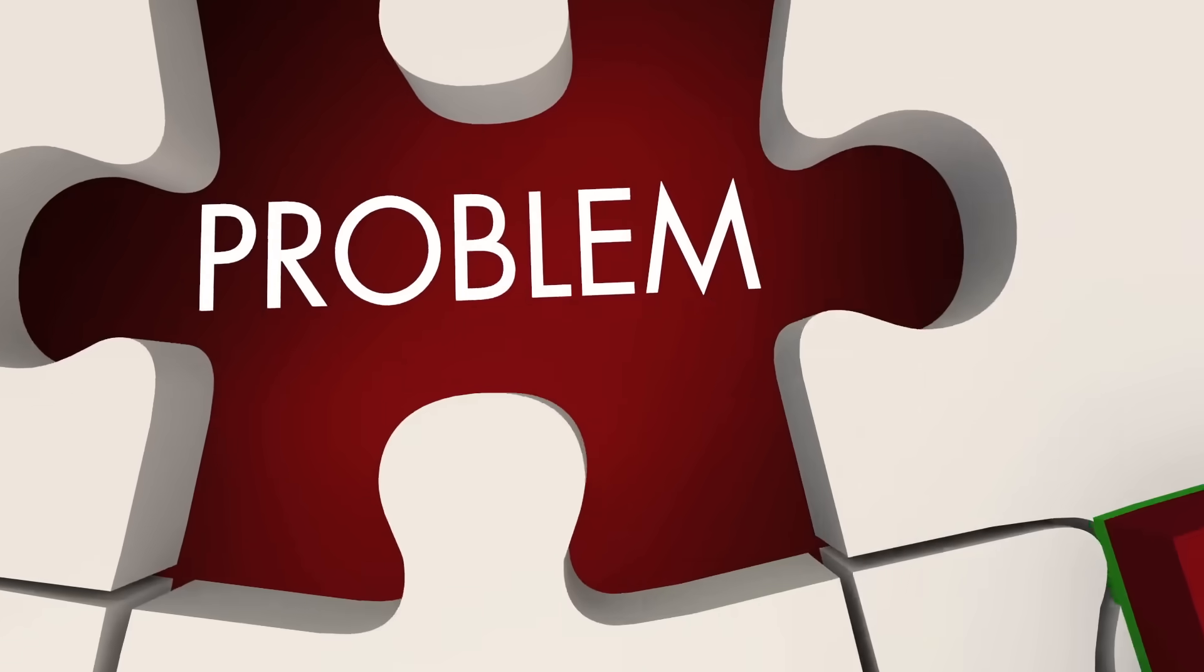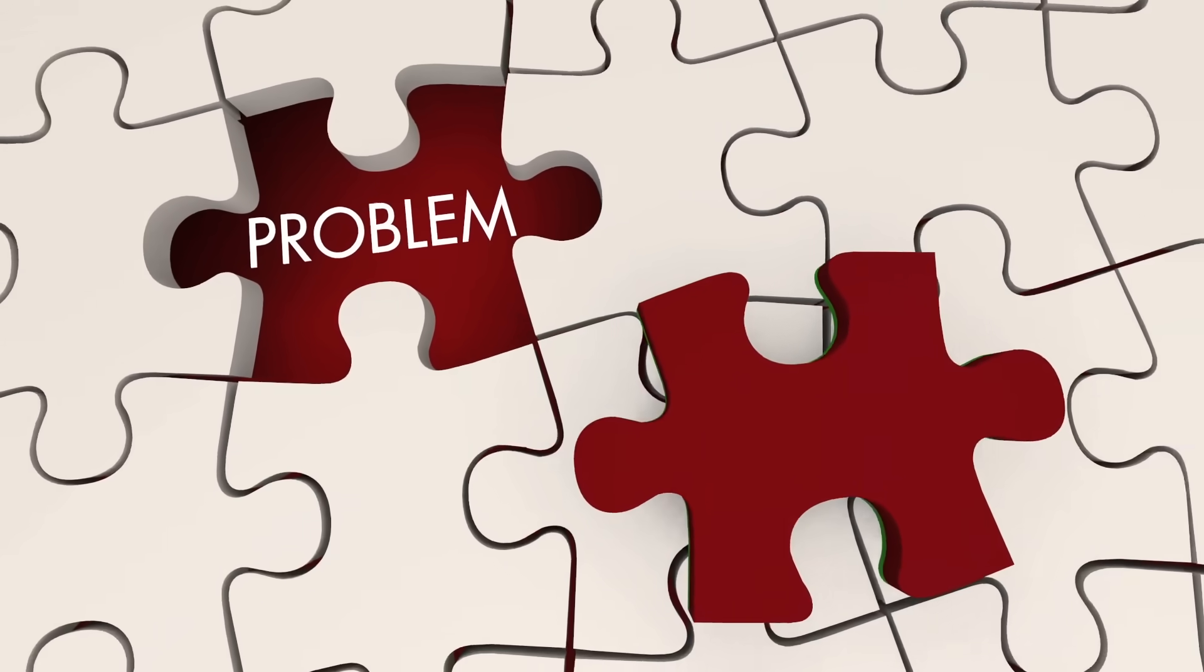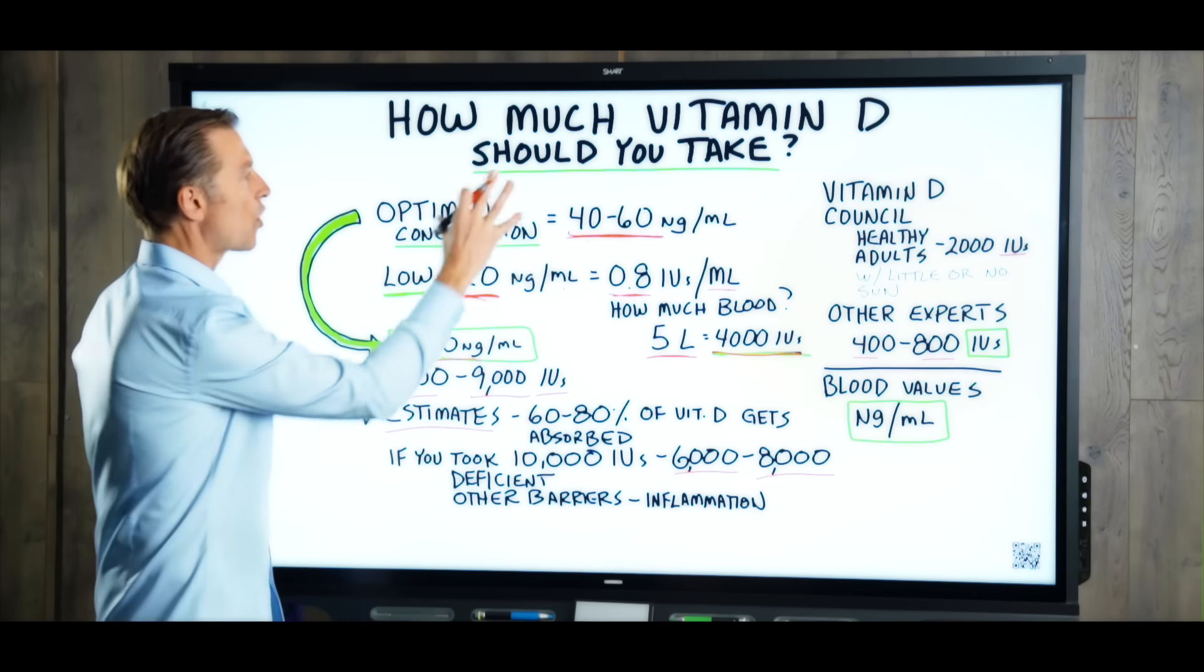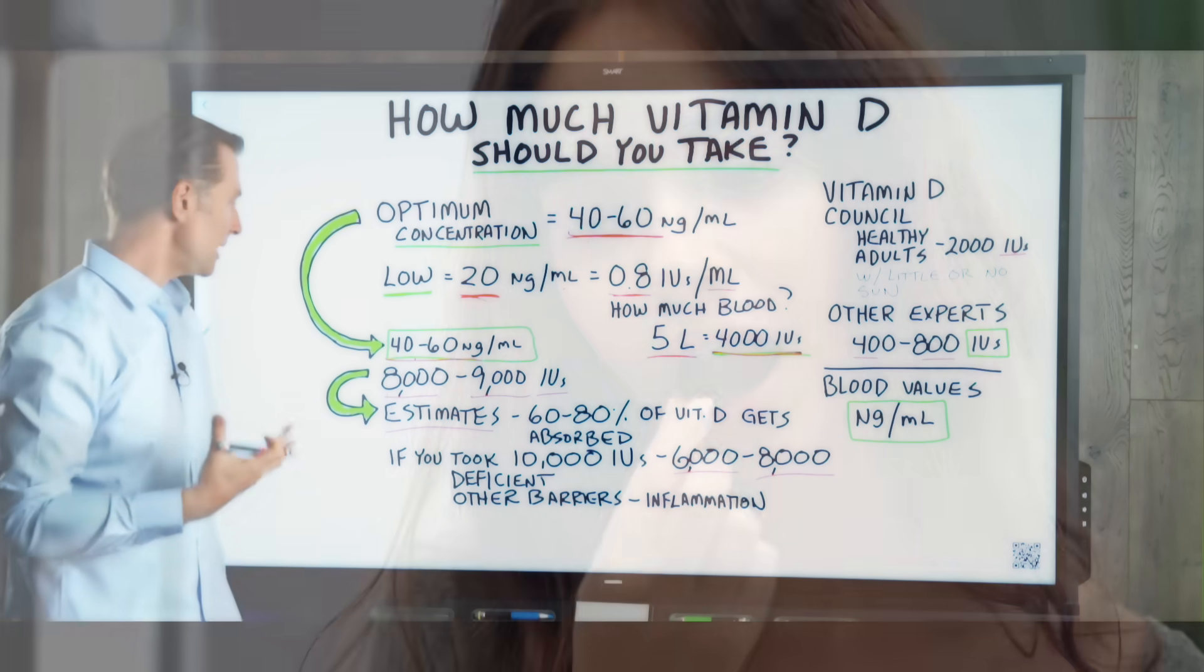you're really only absorbing 6,000 to 8,000 international units of vitamin D3, which just barely makes the normal amount that you need in your blood. So there's a big problem here, because these recommendations do not match what we really need to normalize our blood values.